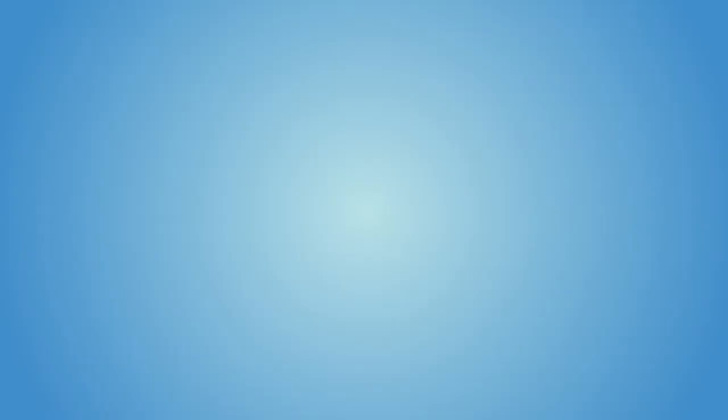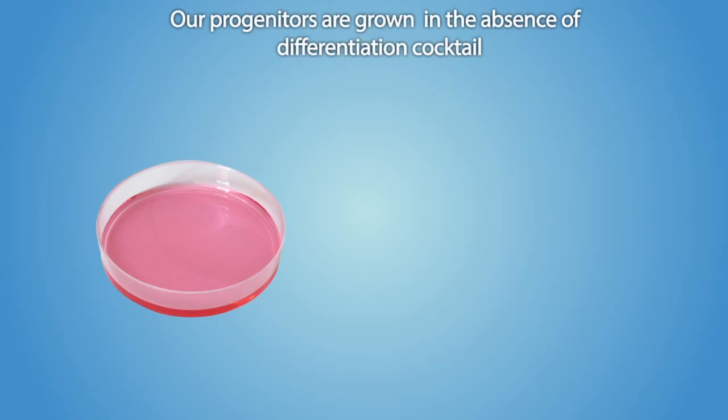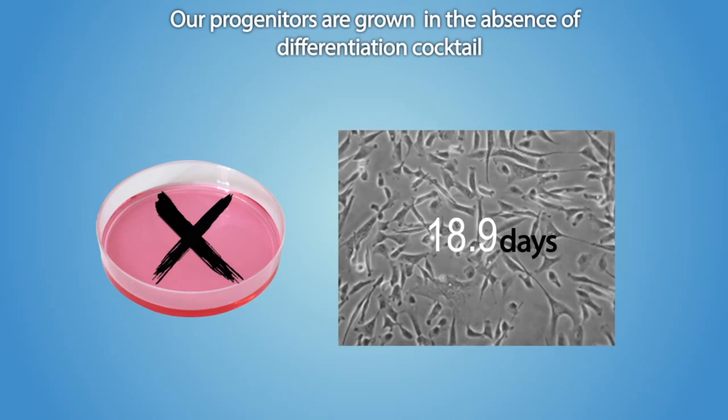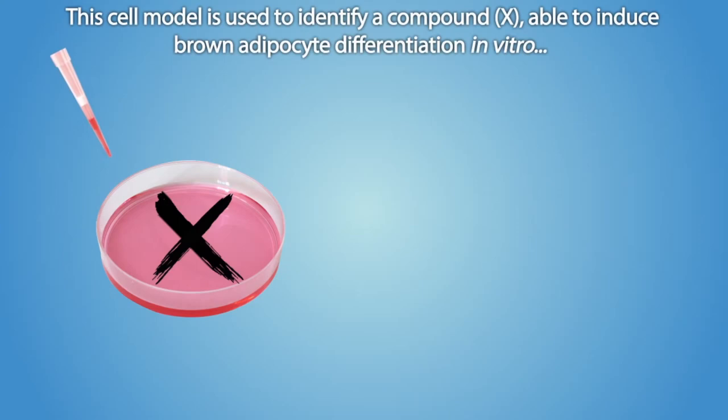Energesis Anti-Obesity Strategy — Energesis Target Cell Culture System: Our progenitors are grown in the absence of a differentiation cocktail. As expected, no brown adipocyte differentiation is observed. This cell model is used to identify a compound X, able to induce brown adipocyte differentiation in vitro, and that might as well boost energy dissipation in vivo.